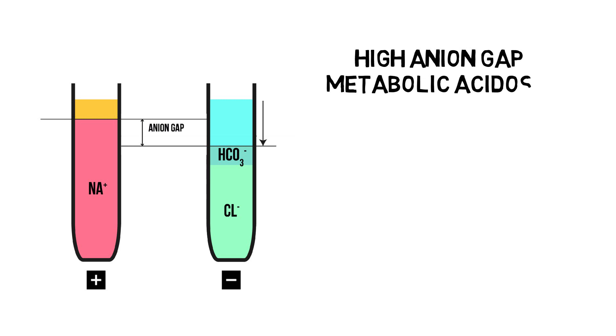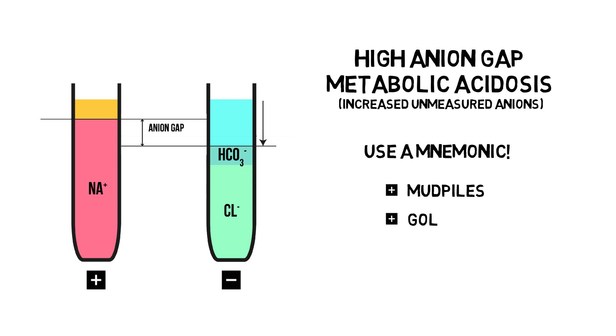Common causes aren't so easily reasoned, but thankfully, people have created mnemonics to help you remember what acids to look for. Two commonly used ones are mud piles and gold mark, but I've done some shuffling myself, and I use the mnemonic kilogram.